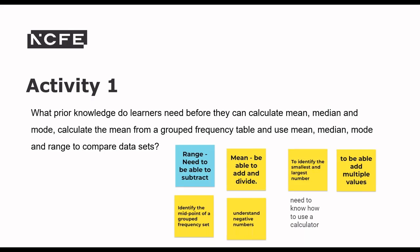For range, learners need to be able to subtract. For mean, they need to add and divide. They need to identify the smallest and largest number, add multiple values, and identify the midpoint of a grouped frequency set. They may need to understand negative numbers, and quite often they need to know how to use a calculator. Using memory buttons on a basic calculator will save them time finding the mean from a grouped frequency table. Any grouped frequency table question in a live assessment will always appear in the calculator section, not the non-calculator section.